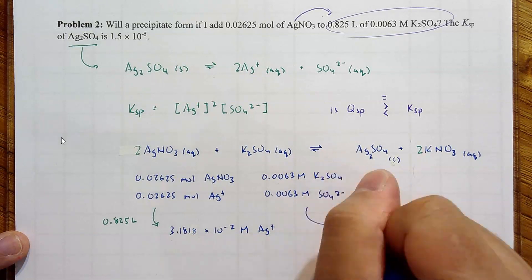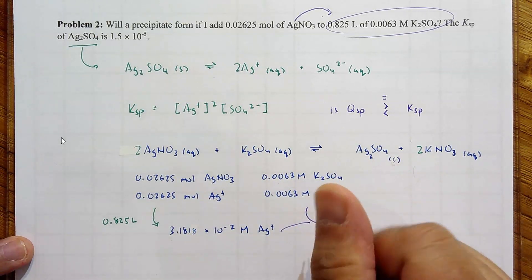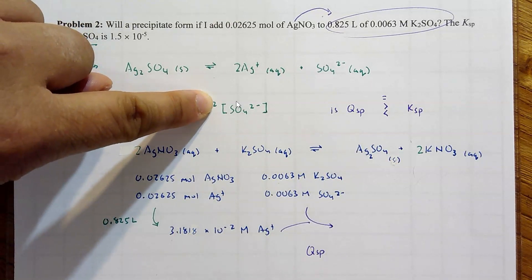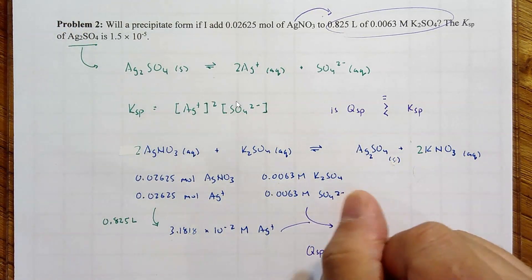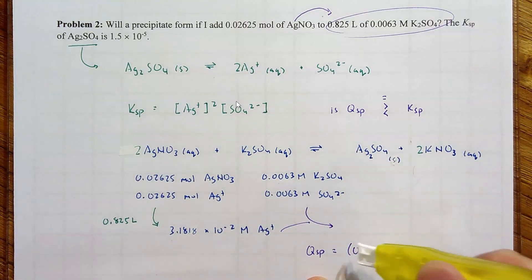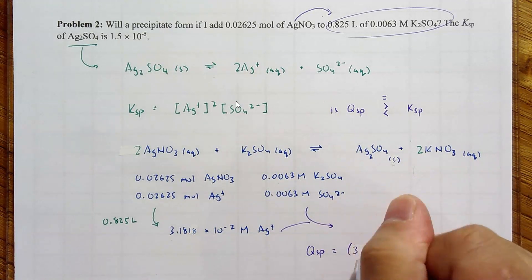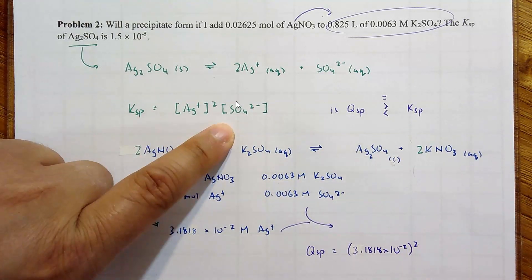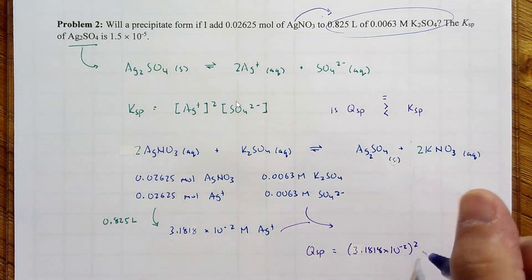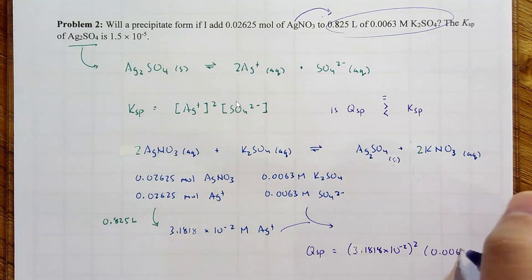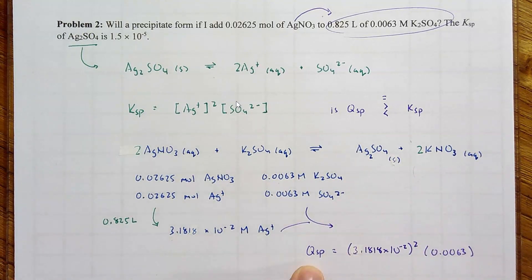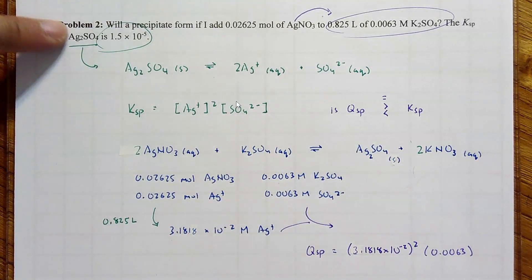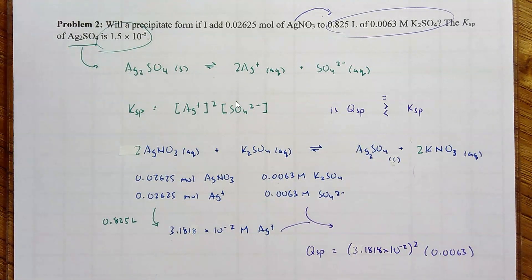Those are your two concentrations that we're going to plug in. So we're going to plug in that and this into what? Into the Qsp. Now don't forget, it's written right there. The silver ion is squared. Equals, that's the number right here. 3.1818 times 10 to the minus 2 squared. And then the sulfate molarity is not squared, it's just taken directly. And we are wondering, is that Q going to be greater than or less than our Ksp? I got everything on the screen.